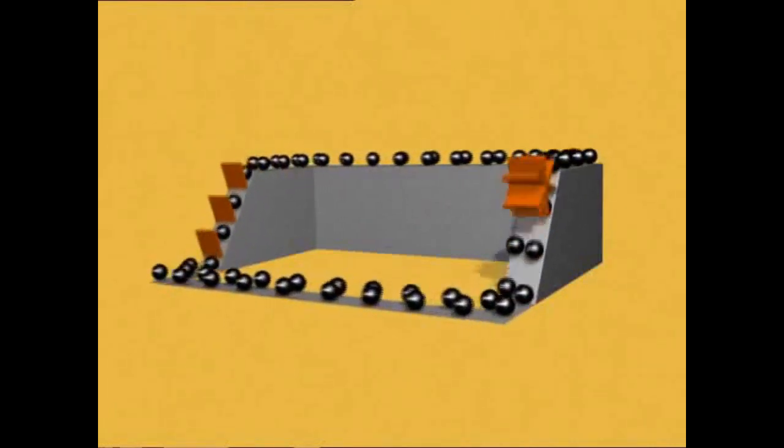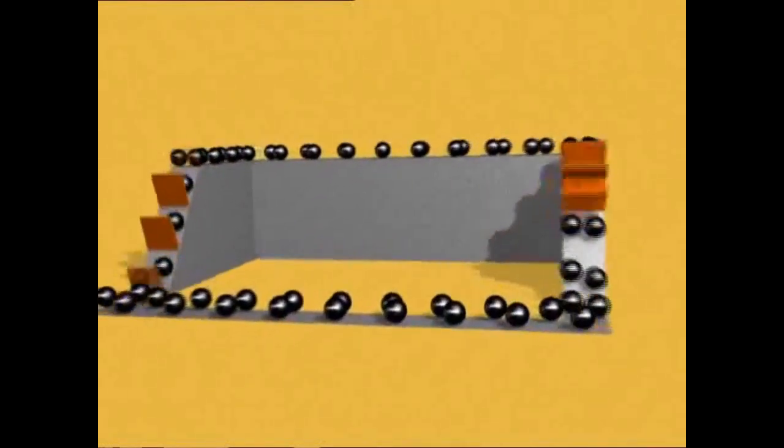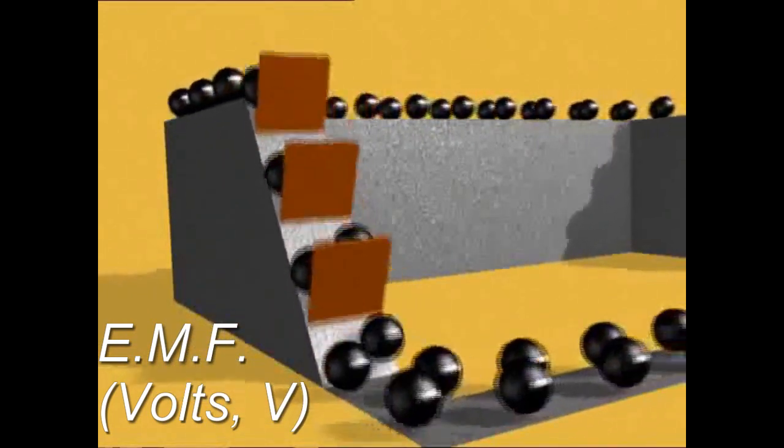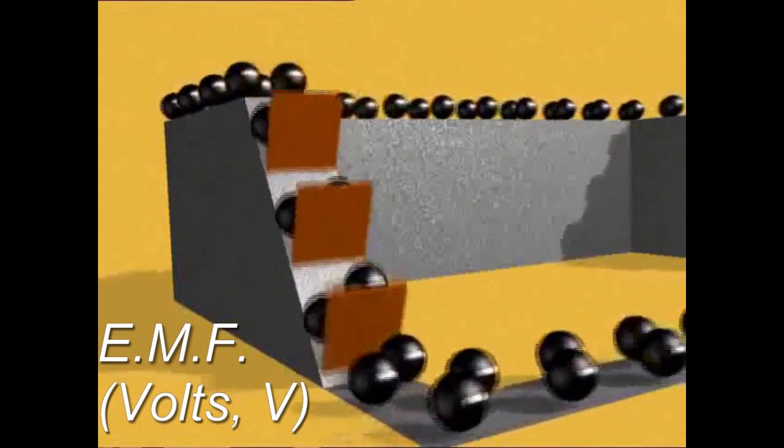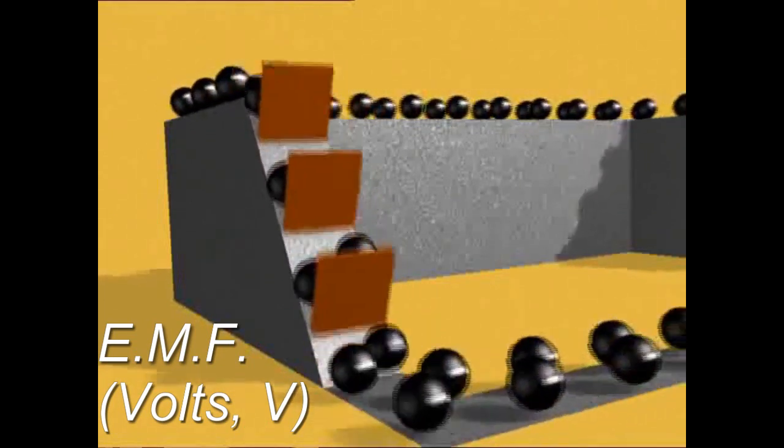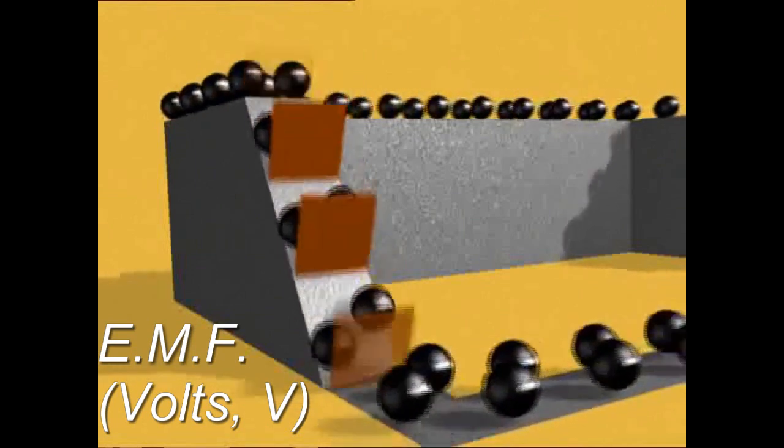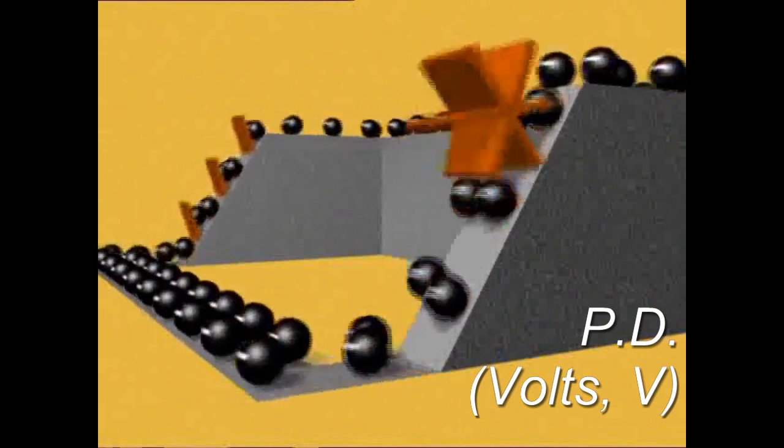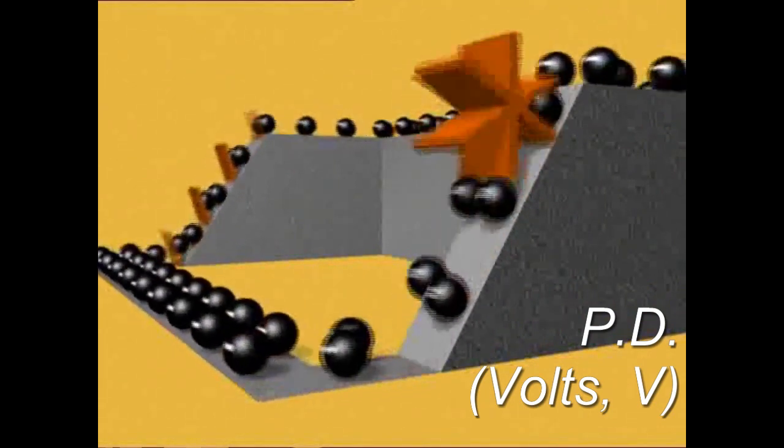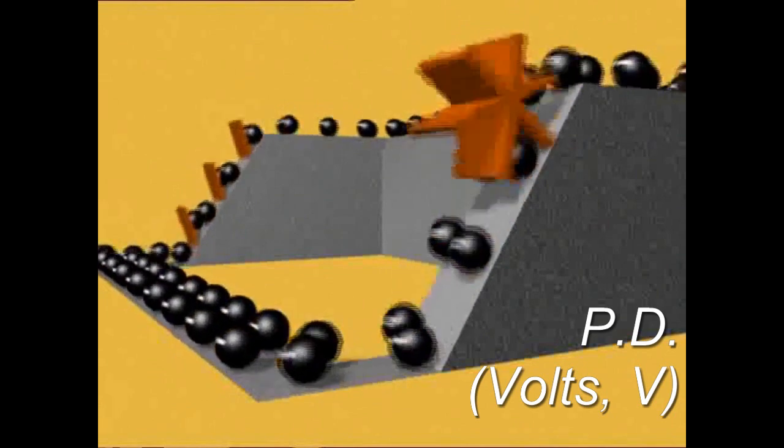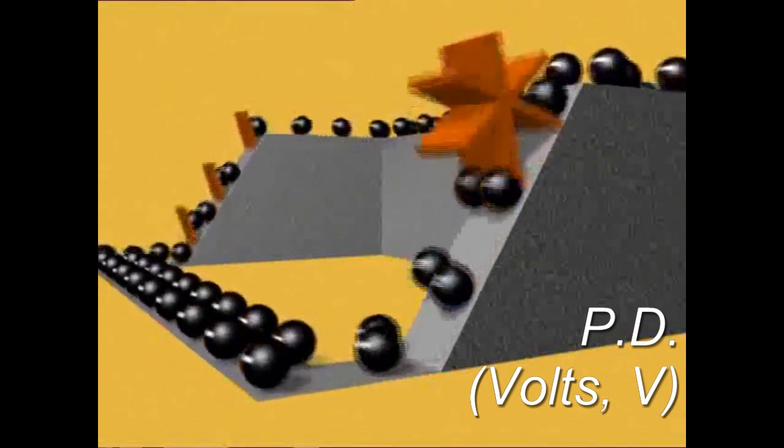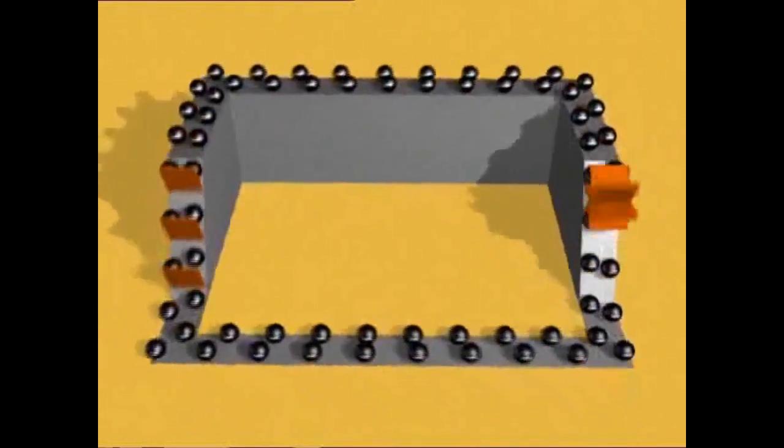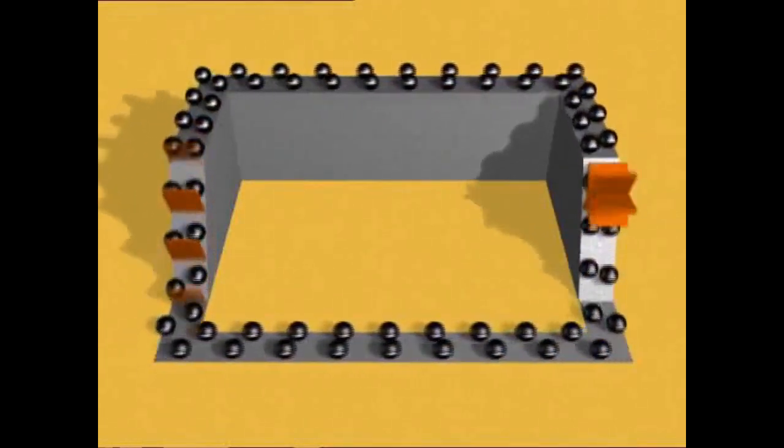This model helps explain what happens in a circuit. The escalator represents the source of electrical energy, like a battery. It gives the charges potential energy by lifting them to a higher level. The paddle wheel represents the electrical component, like a light bulb. As the charges pass the wheel, they turn it and fall to a lower level, losing potential energy. All the electrons return to the escalator where they gain potential energy again.